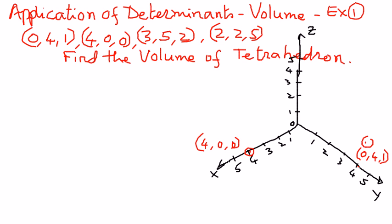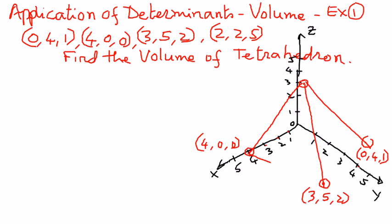The third point is (3, 5, 2): 3 units on the x-axis, 5 units on the y-axis, and 2 units on the z-axis — it will be somewhere there. The fourth point (2, 2, 5) will be somewhere there as well. Once we join these points, we have identified all the vertices of the tetrahedron.